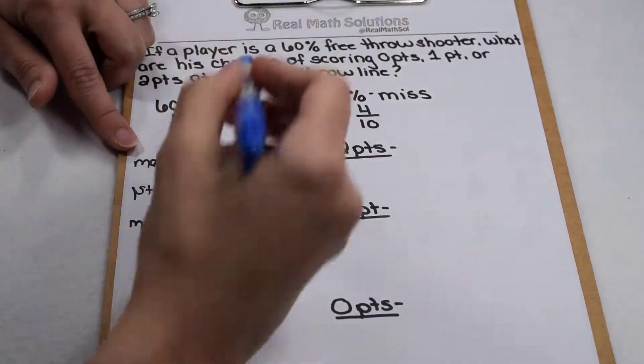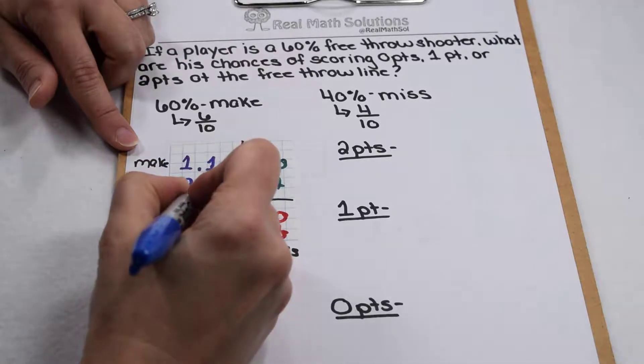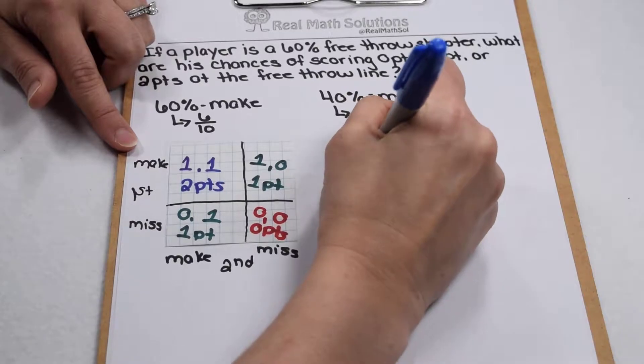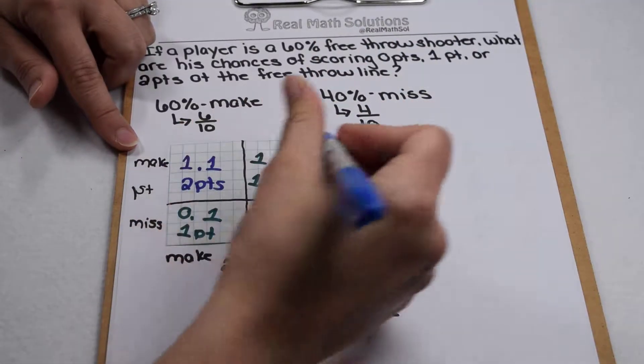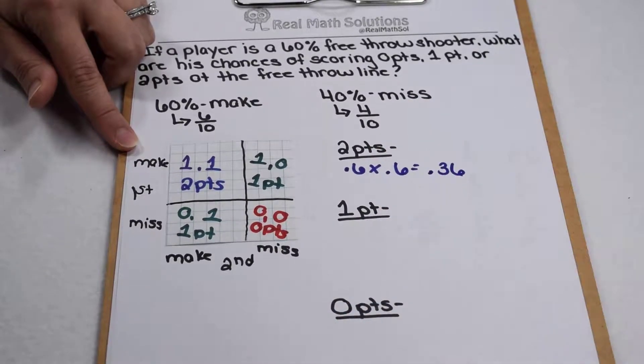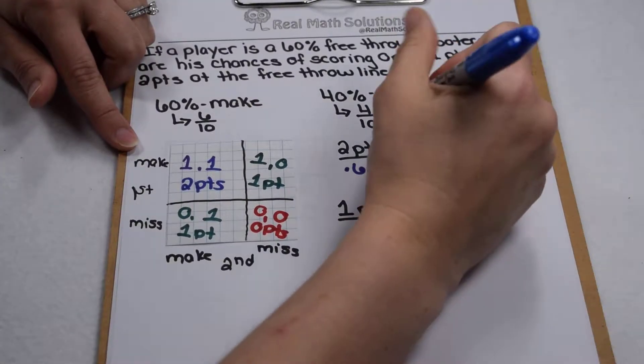So if we put that together, 2 points - 6 tenths by 6 tenths gives us 36 out of 100 boxes there, or as a percent, he would have a 36% chance of scoring 2 points.